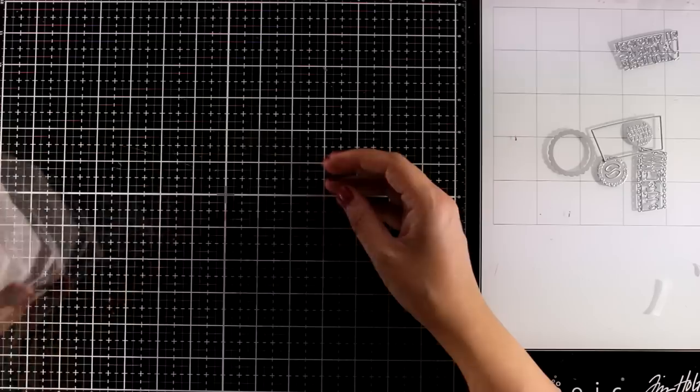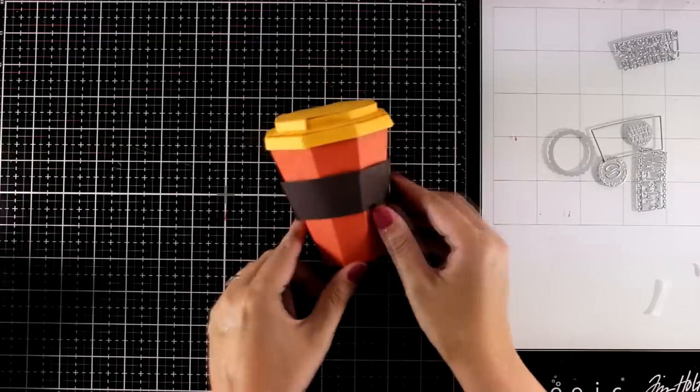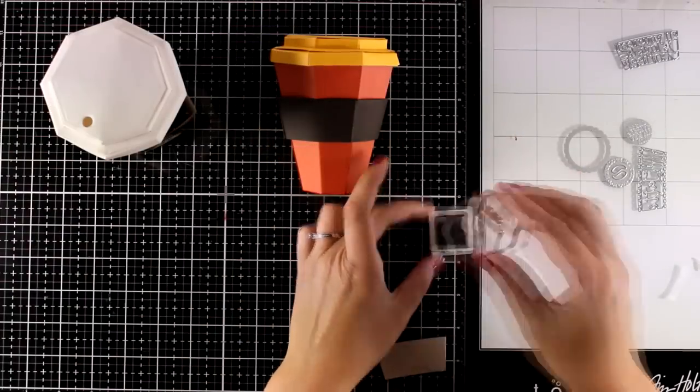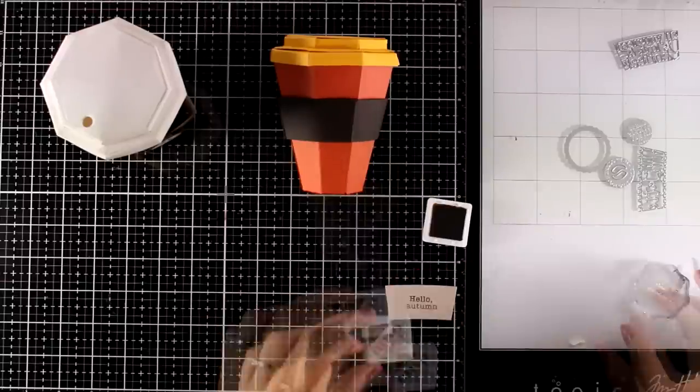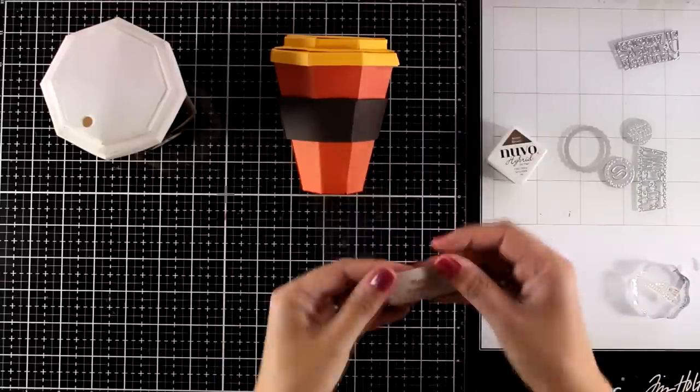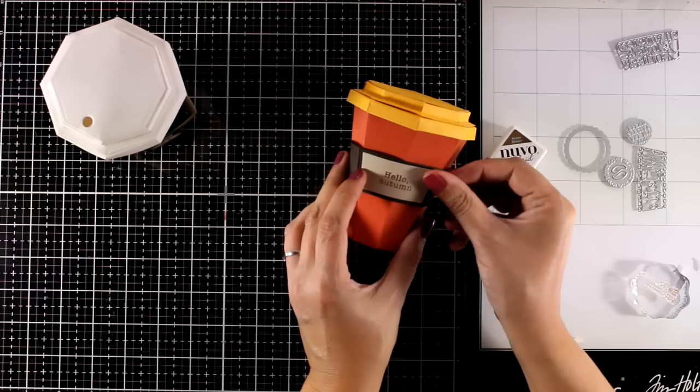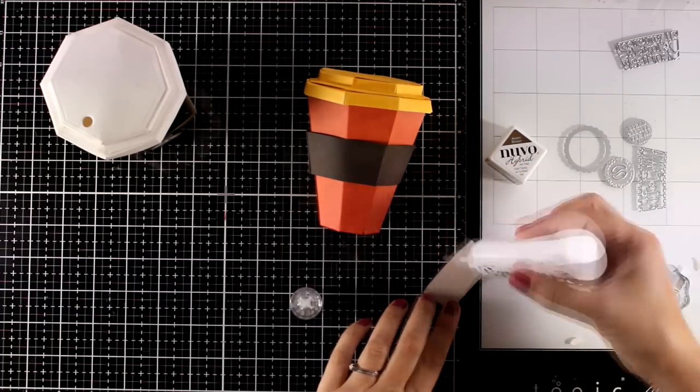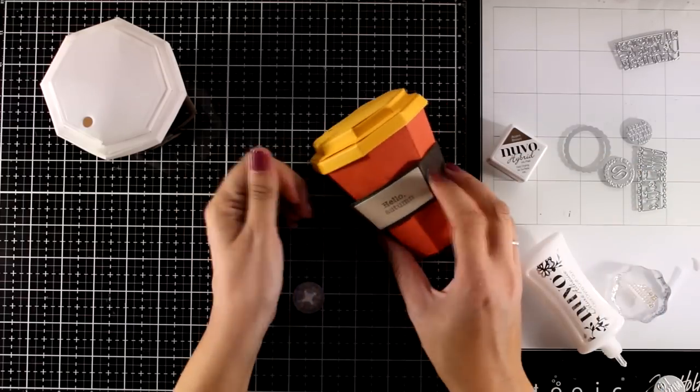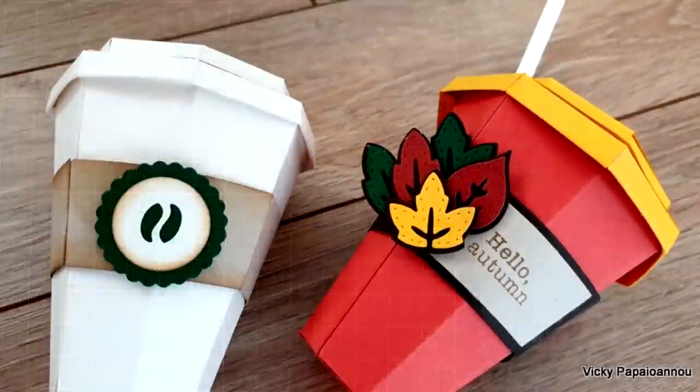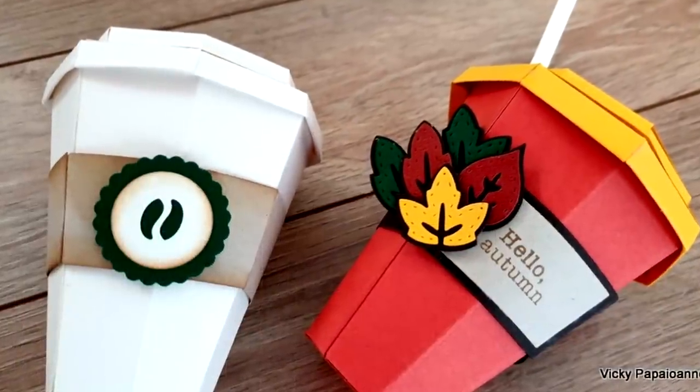And now for my colorful coffee cup I was inspired by fall. That's why I die cut a brown sleeve. Now I'm also going to stamp Hello Autumn with brown ink. I'm going to glue that on top of my band just to add a little bit of extra something. And then I used dies from a previous craft kit by Tonic Studios to die cut all those leaves and create a little cluster.